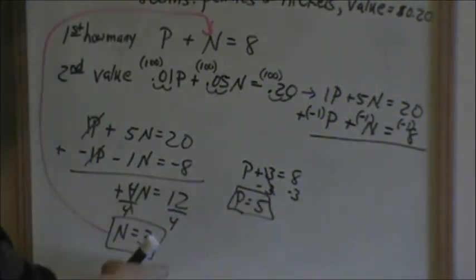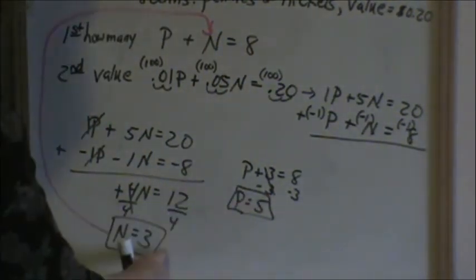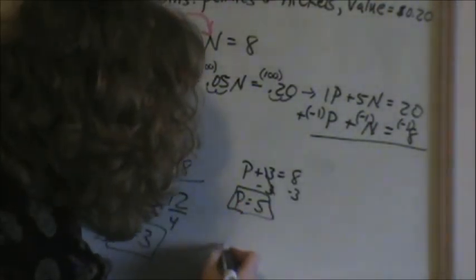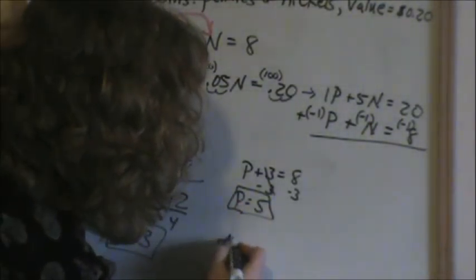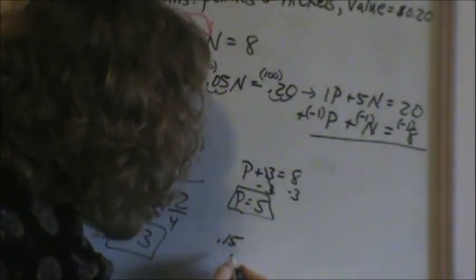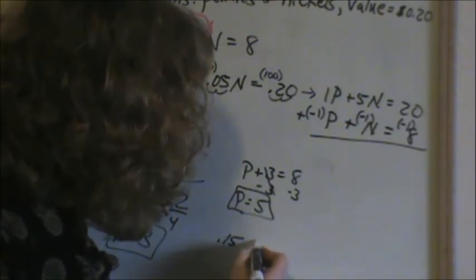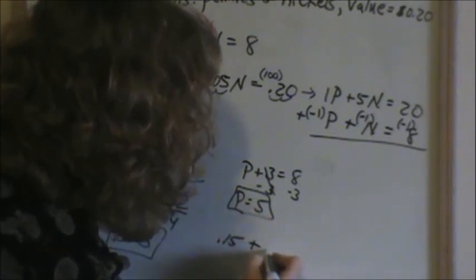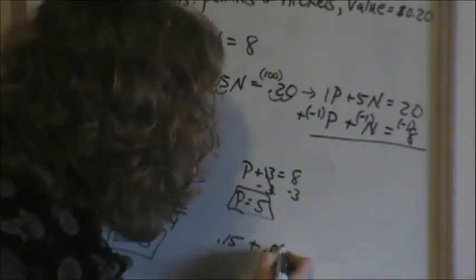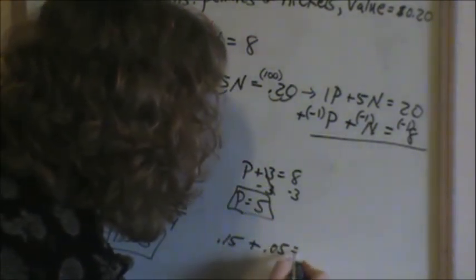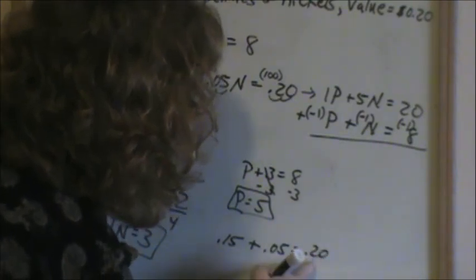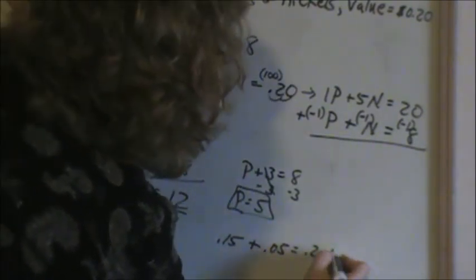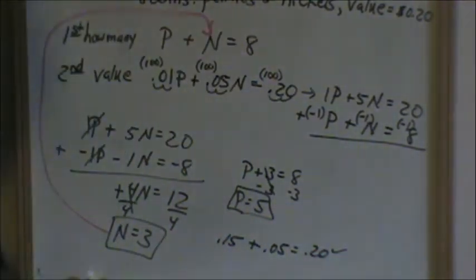If I want to check the value: 3 nickels — 5 cents for every nickel — that's 15 cents. Plus 5 pennies, which is 5 cents, does give me 20 cents, which is what the problem told me. So this does check.